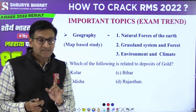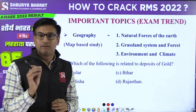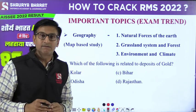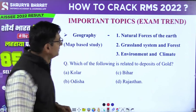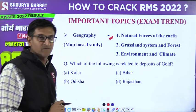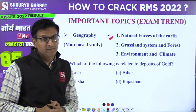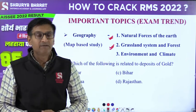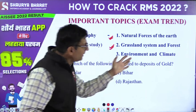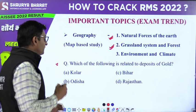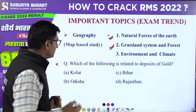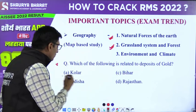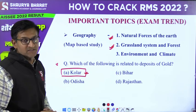From geography, the first and foremost part is map-based study. Use the atlas and mark different portions like continents, oceans, some capitals, peninsula, islands, etc. Some more topics: natural forces of the earth — volcano, earthquake, etc. — grassland systems and forest types, and also environmental issues like global warming, greenhouse effect, ozone depletion, and climatic pattern and monsoon. Example question: Which of the following is related to deposits of gold? The correct answer is the Kolar field in Karnataka.